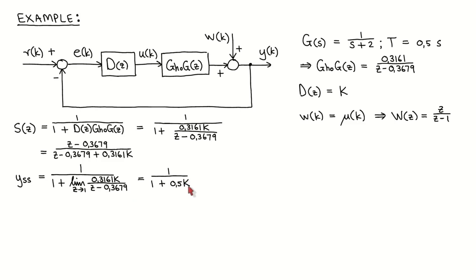By specifying the maximum steady-state value of the output in response to a step disturbance input, we can translate it to a minimum acceptable controller gain. If we require the steady-state output to be zero, then we can also translate it to a specification of the structure of the controller, since it might be necessary to add a pole at Z equal to 1 to meet this requirement.